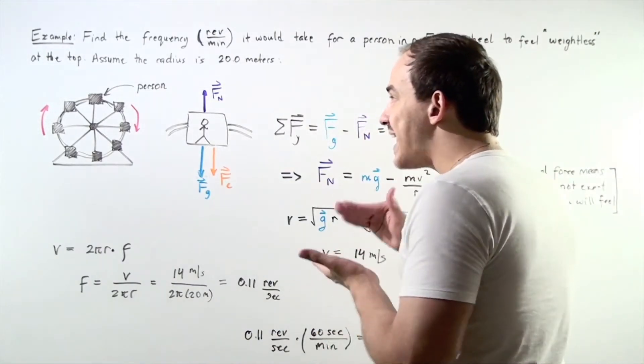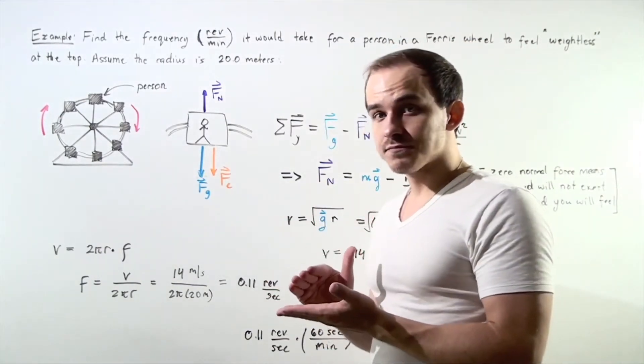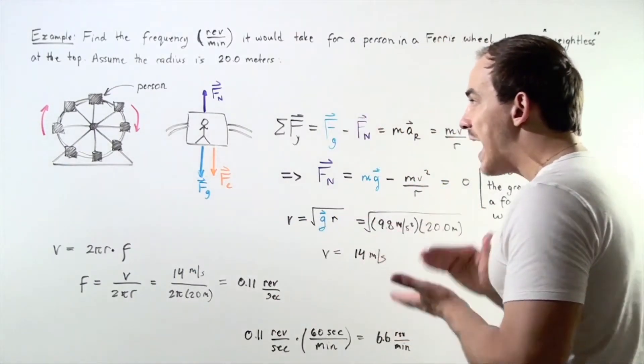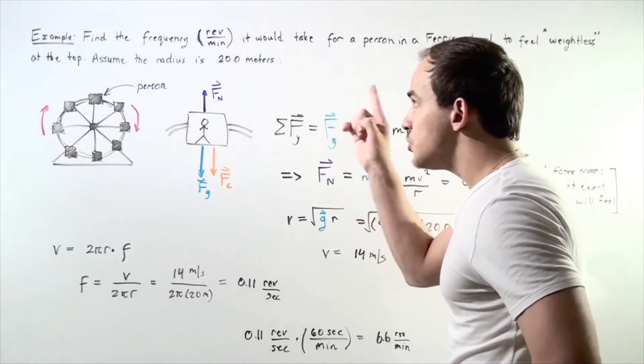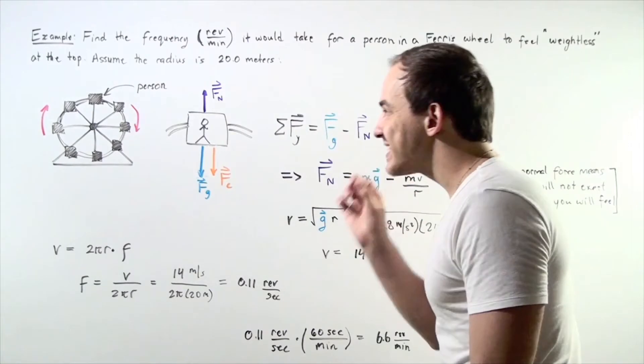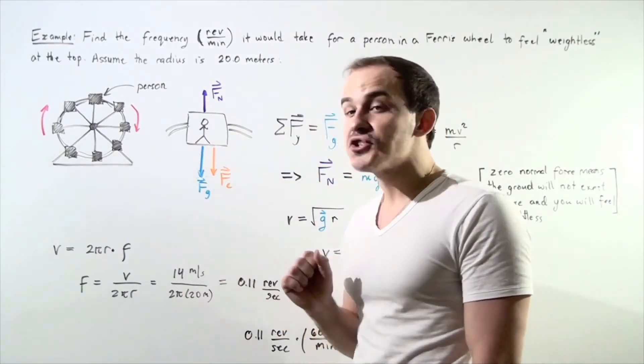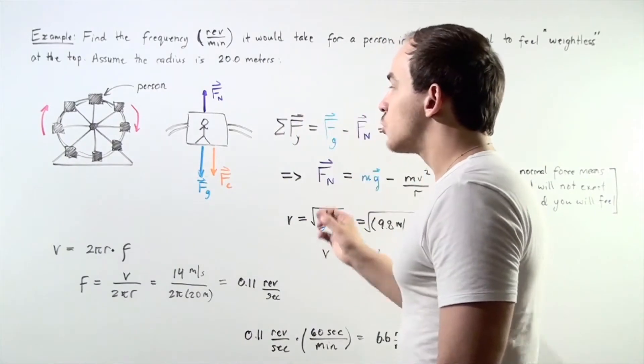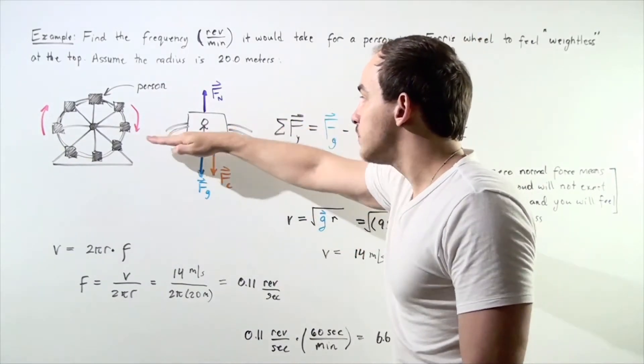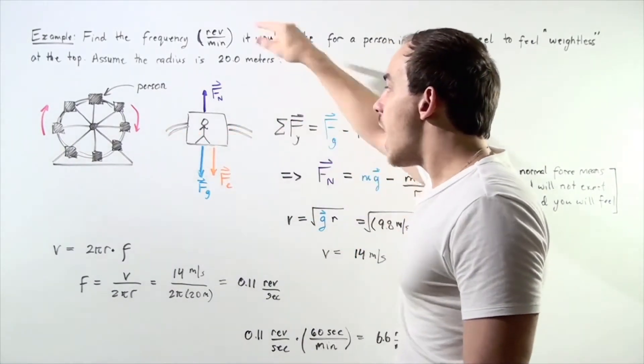If a person is standing on a scale, we want to figure out what our frequency should be so that the scale reads zero. Remember, what the scale actually reads is the normal force created by the bottom of the cabin on the person.